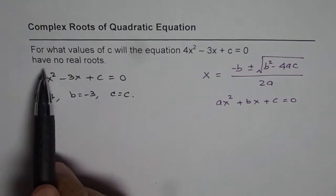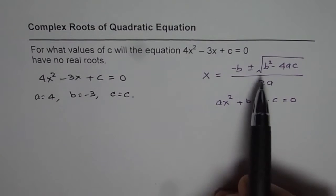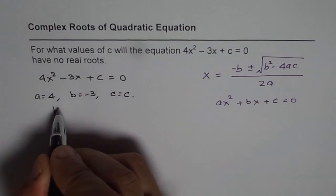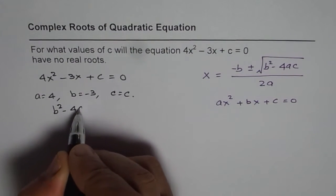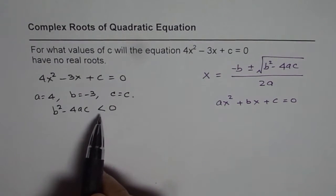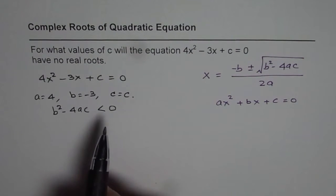When we say have no real roots, that means the part in the radical is negative. So we're trying to figure out when b² - 4ac < 0. Equal to 0 will give you one real root; less than 0, no real root.